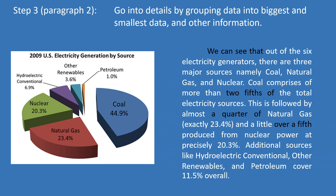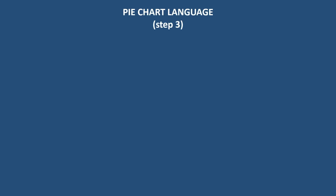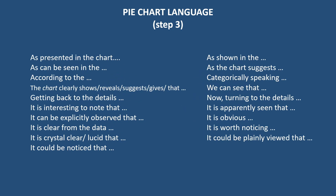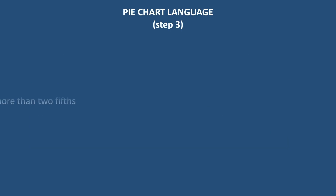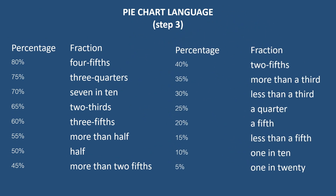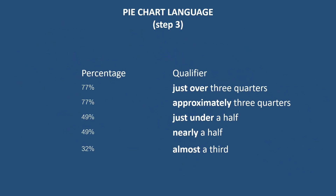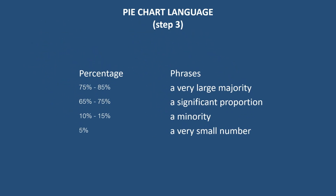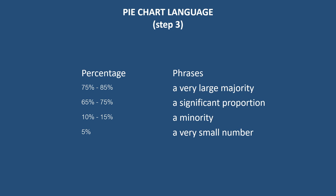Similar to steps one and two, use pie chart language to start the paragraph as well as in describing the data. You may explain the information by pointing out percentages, or convert them into fractions, or use appropriate English phrases. Use the following to begin the first sentence in step three — take a moment to read them all. To convert percentages into fractions, please study this list. If the percentages do not exactly match, then use these qualifiers. You may also use other phrases to describe a certain range of data.